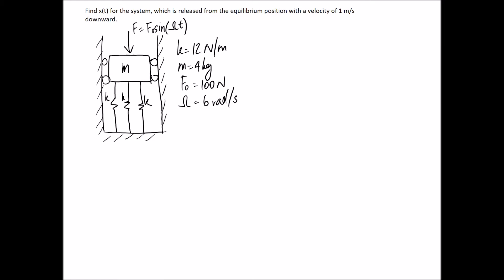We're asked to find x of t for the system, which is released from the equilibrium position with a velocity of 1 meter per second downward. We can see that this is going to be a forced vibration question because we have this forcing function applied to our mass, which is going to cause it to vibrate forever and ever.